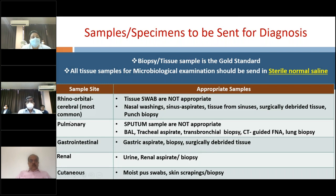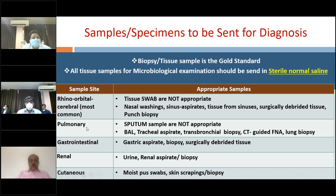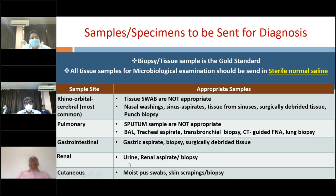Other causative agents include Rhizomucor, Apophysomyces, Lichtheimia, Mucor, Cunninghamella, Syncephalastrum, Saksenaea, and Cokeromyces. Apophysomyces variabilis is important in isolated renal mucormycosis. Agents causing entomophthoromycosis — Conidiobolus and Basidiobolus — cause chronic subcutaneous infections. In the Indian subcontinent, Apophysomyces is the second most common isolated genus after Rhizopus. Regarding samples for diagnosis, biopsy or tissue sample is the gold standard and all tissue samples should be sent in sterile normal saline, not formalin. In rhino-orbital cerebral mucormycosis, tissue swabs are not appropriate; deeper surgically debrided tissue with necrotic parts and punch biopsies are most useful. For pulmonary mucormycosis, sputum samples are not appropriate most of the time, but thick well-expectorated mucopurulent sputum can help. Deep samples like bronchial lavage, tracheal aspirates, and biopsies are preferred. Renal mucormycosis can be diagnosed from a full-voided 24-hour urine sample.